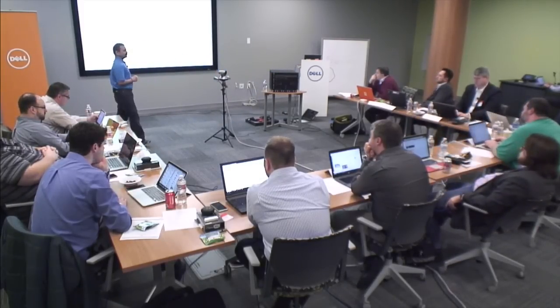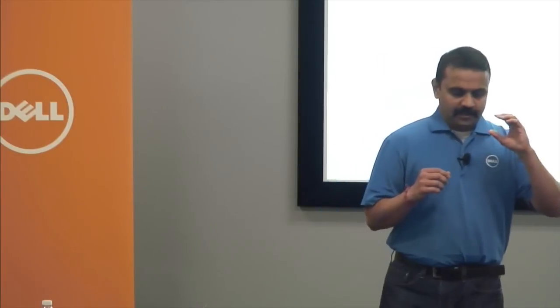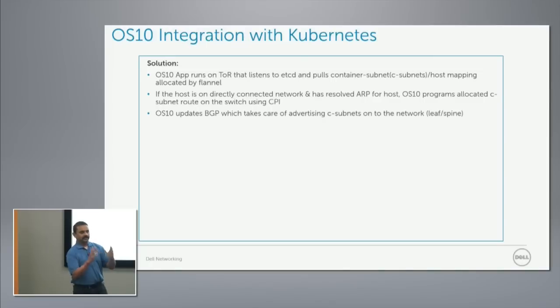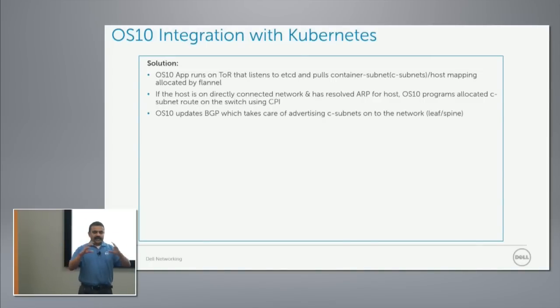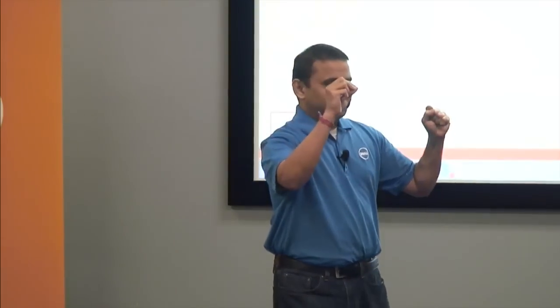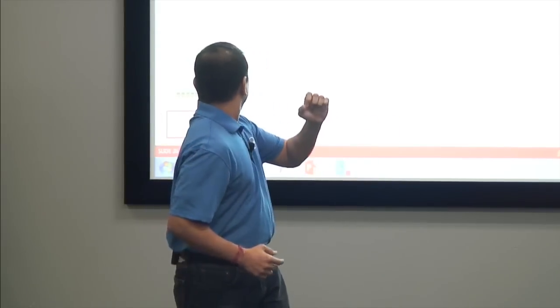We decided to write a piece of software on the ToR box. The setup is a three-node Kubernetes cluster with a ToR, leaf, and spine. We wrote software on the ToR that listens to the etcd of the Kubernetes cluster. The etcd has all the information about the Kubernetes network parameters. When Flannel allocates a subnet to each host, it writes into etcd saying that this container subnet is located on this host.